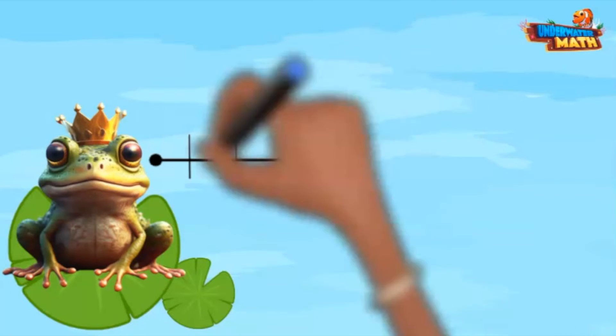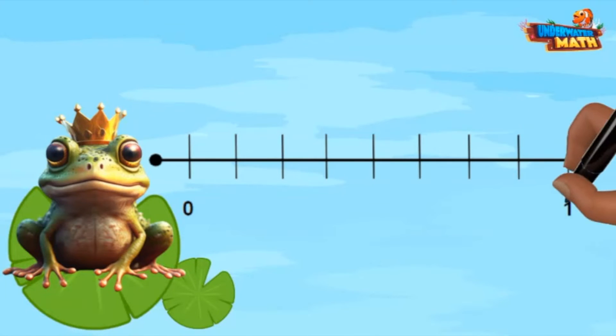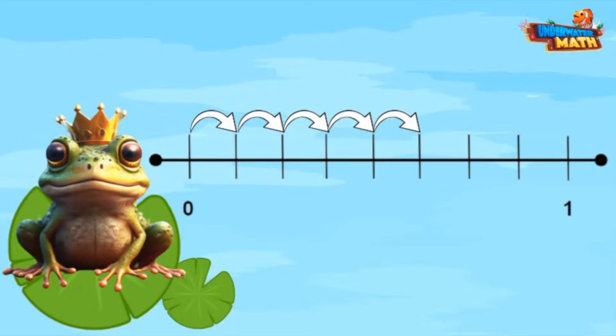Here is a number line now. It's divided into equal parts. I always start at zero and hop on each of the hash marks represented until I reach one. One, two, three, four, five, six, seven, eight. This number line is divided into eight equal parts or eighths.